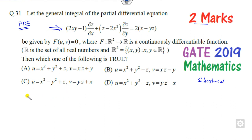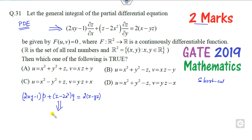This is of the form: p plus (z minus 2x squared) q equals a constant value that is independent of the partial derivative. If you try to solve it manually, you can use either the Lagrange function formula or other methods to find the two solutions. But since it is MCQ, you have to solve it with the help of a trick.